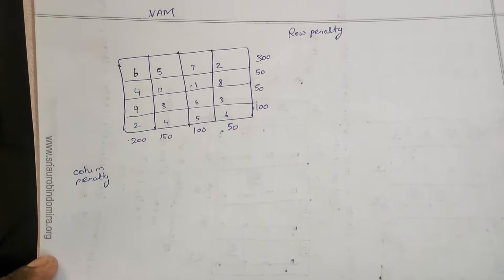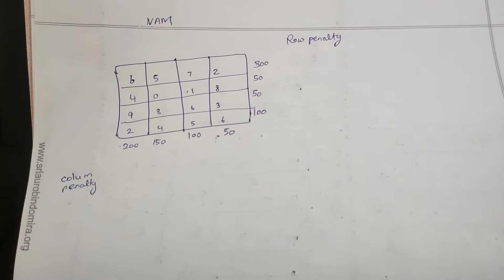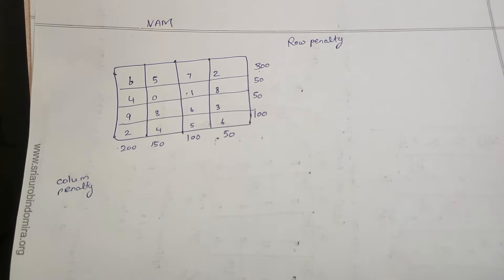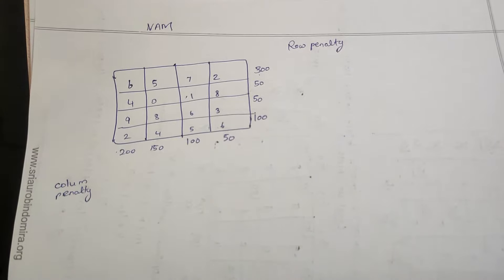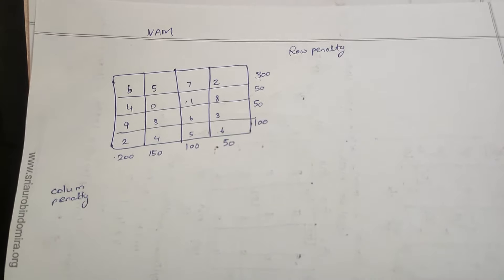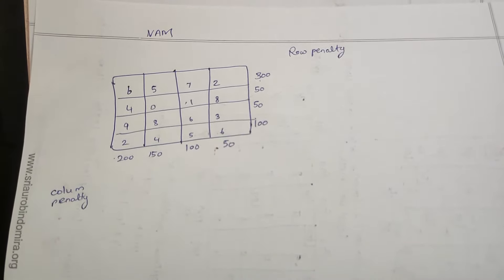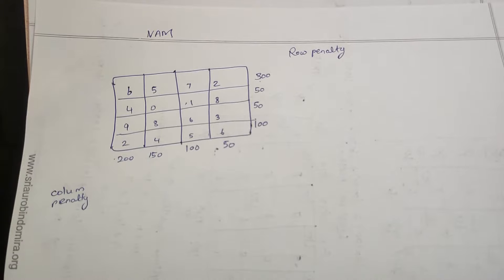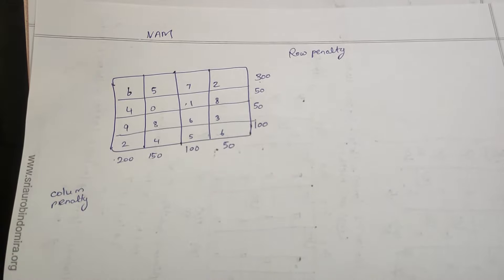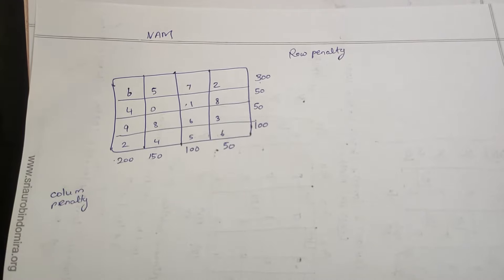Hello friends! In this video, we will talk about the last type of transportation model. VAM — Vogel's Approximation Method. This Vogel's Approximation Method is very important. What method is used in the VAM method? There is a least cost in VAM method. This method has an extra benefit. In this method, the penalty is used.